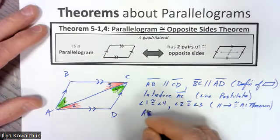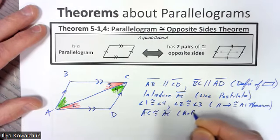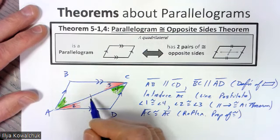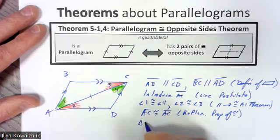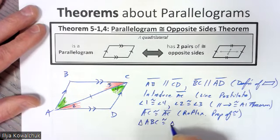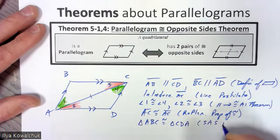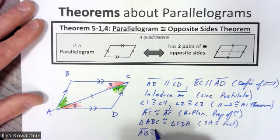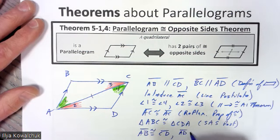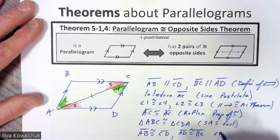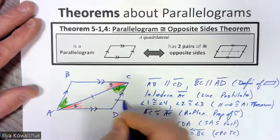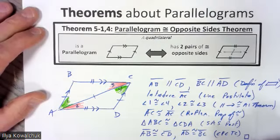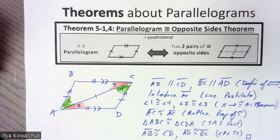We can also say AC is congruent to AC by the Reflexive Property. Now we have Angle-Side-Angle, so our two triangles are congruent. Being careful with the congruency statement: triangle ABC is congruent to triangle CDA — that's Angle-Side-Angle. Finally, AB is congruent to CD and AD is congruent to BC by CPCTC, proving opposite sides of a parallelogram are congruent.